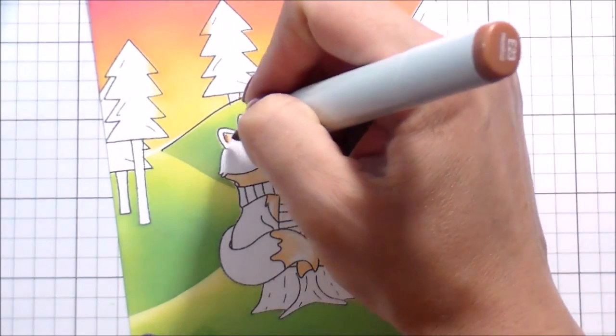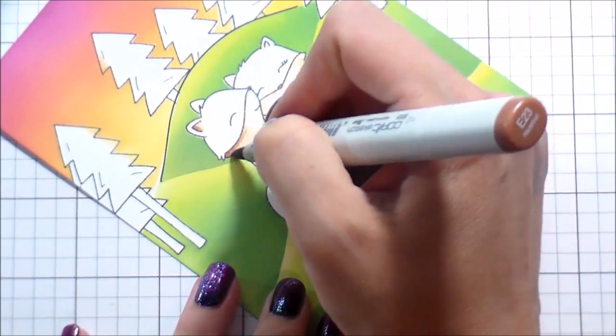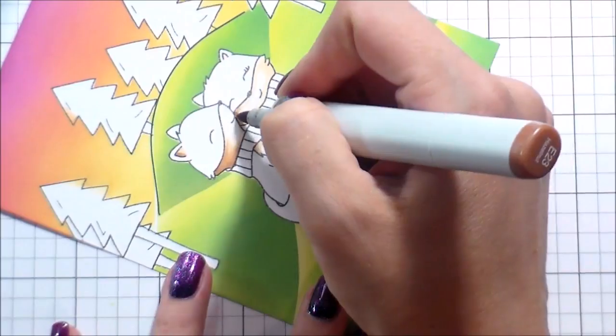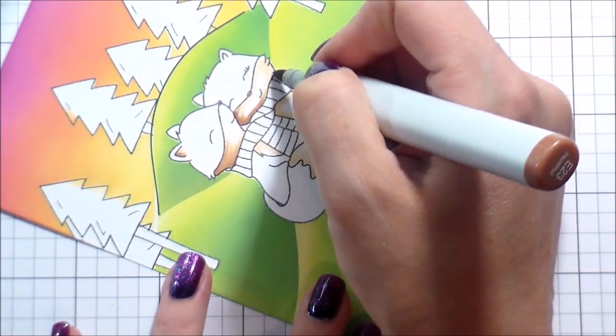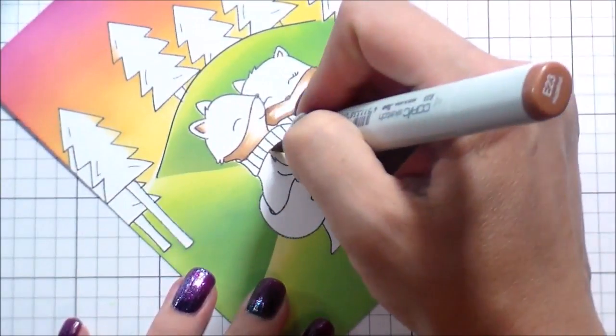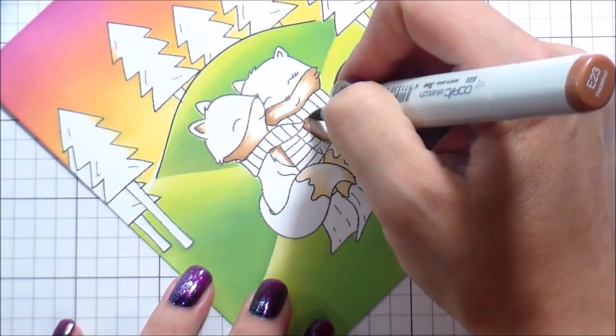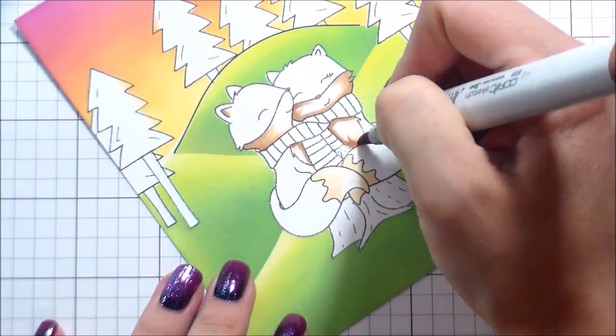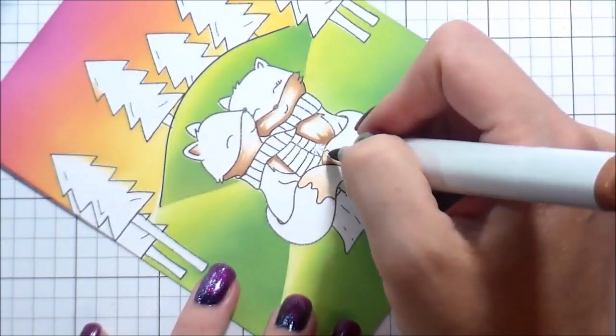So I wanted the underneath of their faces, their bellies, and the little tip of their tail to be lighter. So I'm using the E21 and the E23 there. Where her face is tucked under his face, it's going to be darker. Where their little bellies are pushed together underneath the scarf, that's going to be darker.